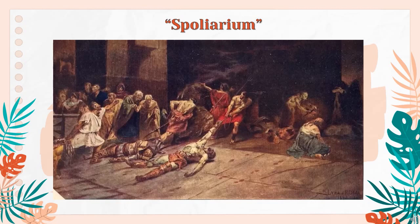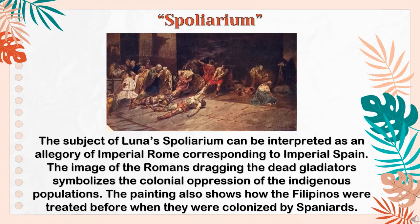Here is a picture of Juan Luna's masterpiece, the Spoliarium. The subject of Juan Luna's Spoliarium can be interpreted as an allegory of Imperial Rome corresponding to Imperial Spain. The image of the Romans dragging the dead gladiators symbolizes the colonial oppression of the indigenous populations. The painting also shows how Filipinos were treated when they were colonized by Spaniards — forced to entertain Roman oppressors and sacrifice themselves for the Romans' and Spaniards' honor, and treated as if they were worth less than animals.